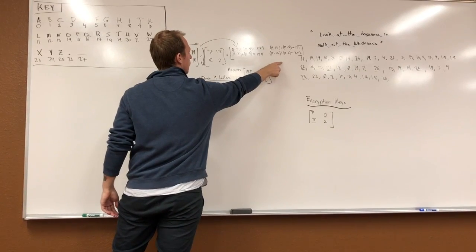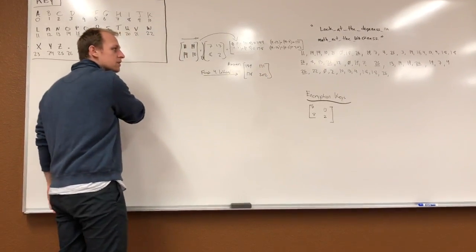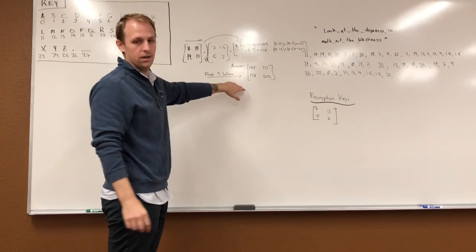178, and keep going with that. We get 189, 171, 178, 202. So these are the first four letters of our message encrypted.